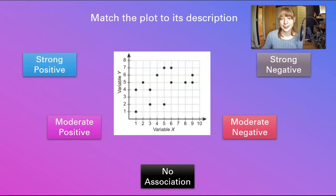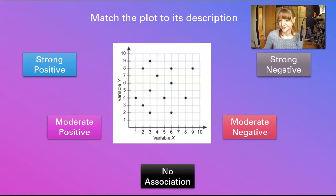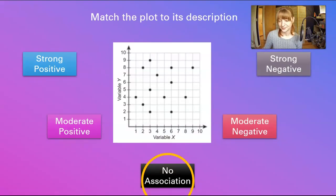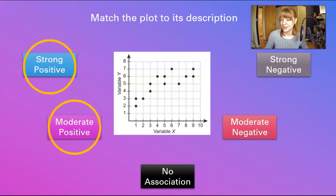Let's look at a few scatter plots. The first one looks like it's going up to the right and it's not very close to a line, so maybe this is moderate positive. The next one is going down to the right and looks very close to a line, so that's a strong negative. Another one doesn't have any identifiable pattern, so that's no association. The last one is definitely going up to the right, moderately close fit — maybe somewhere between moderate and strong positive, so a moderate-strong positive association.